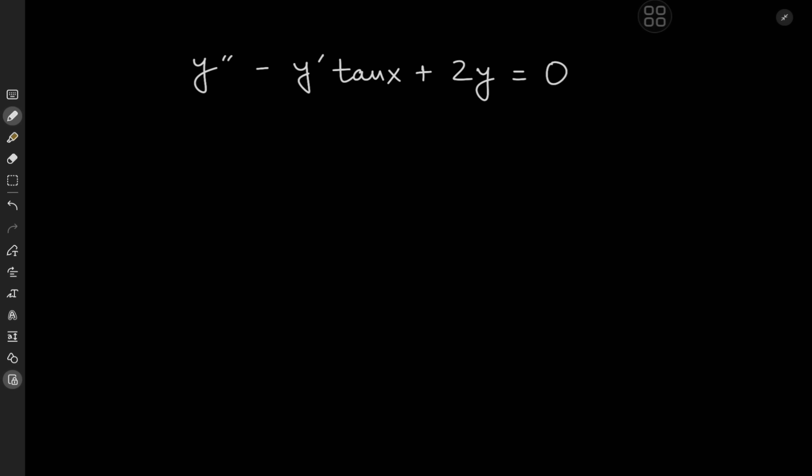What do I mean by that? Well, this is a second order linear differential equation, so there are two kinds of functions that would satisfy this equation, and we make a linear combination of those two functions to come up with a general solution. So we need one solution first. To make an educated guess, let's first expand the tangent term. We have y double prime minus y prime times sine x divided by cosine x plus two times y equal to zero. We get a hint that we might want to get rid of the pesky cosine term in the denominator — if the y prime term cancels out with the cosine term, that could make our lives much easier.